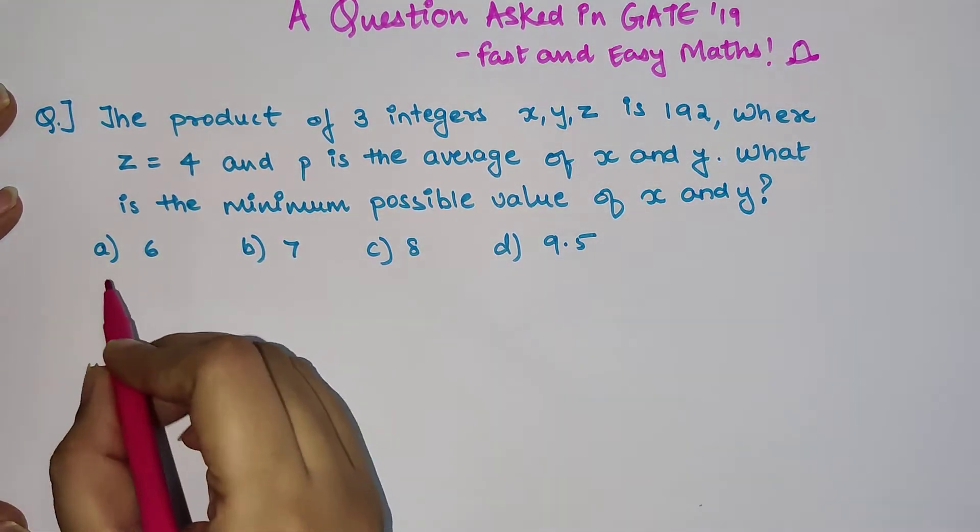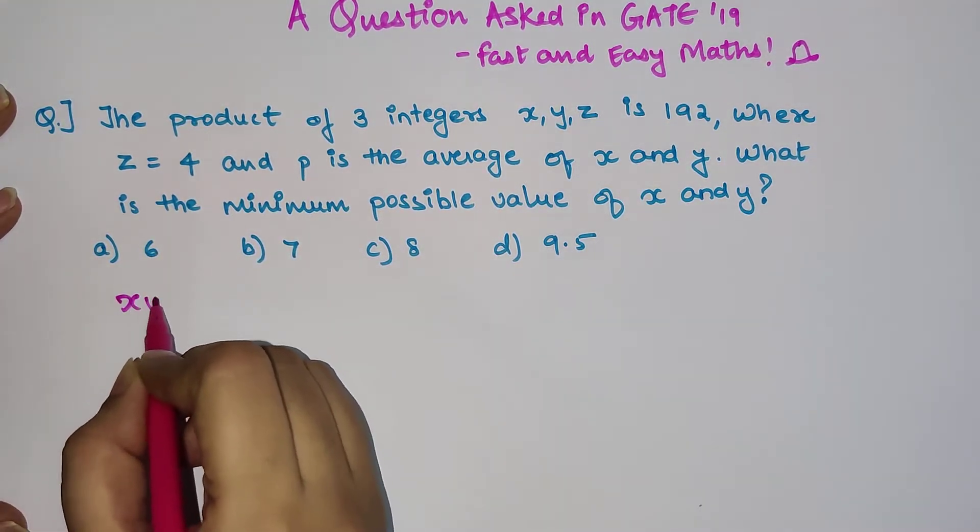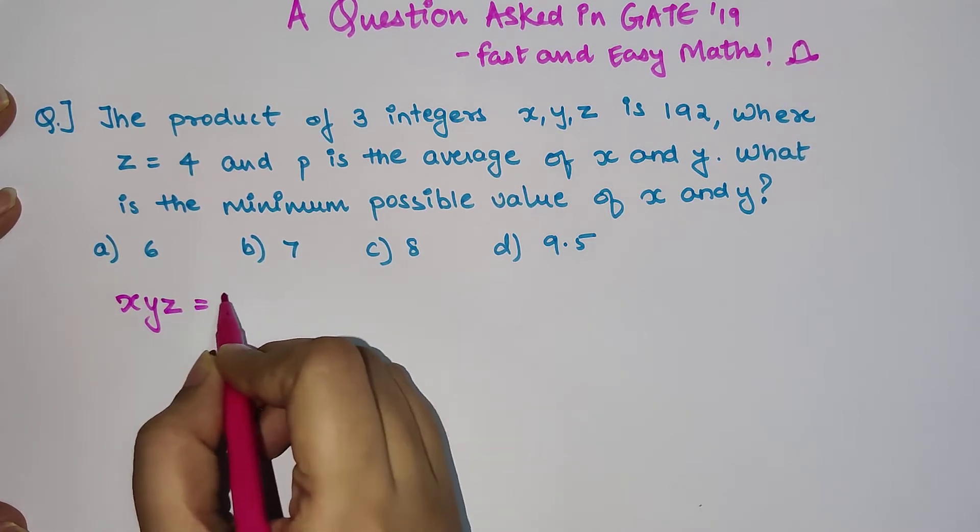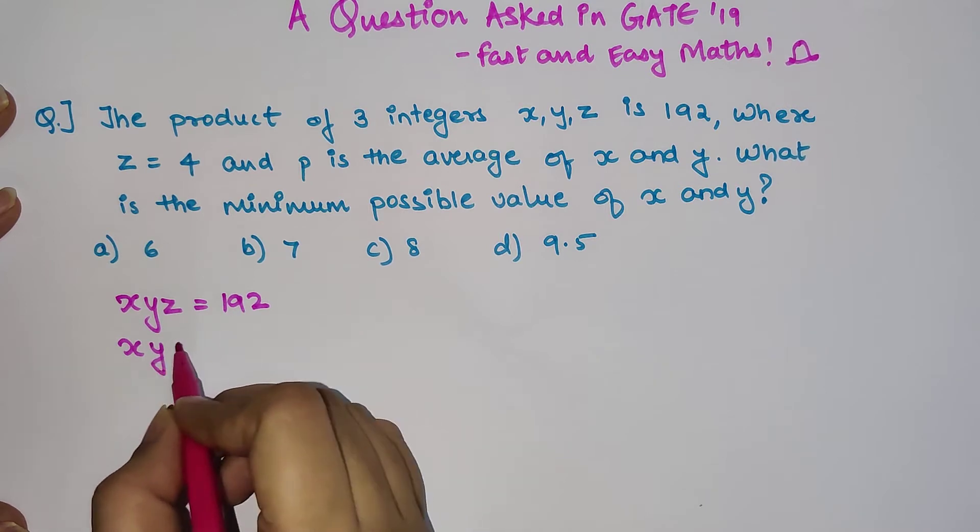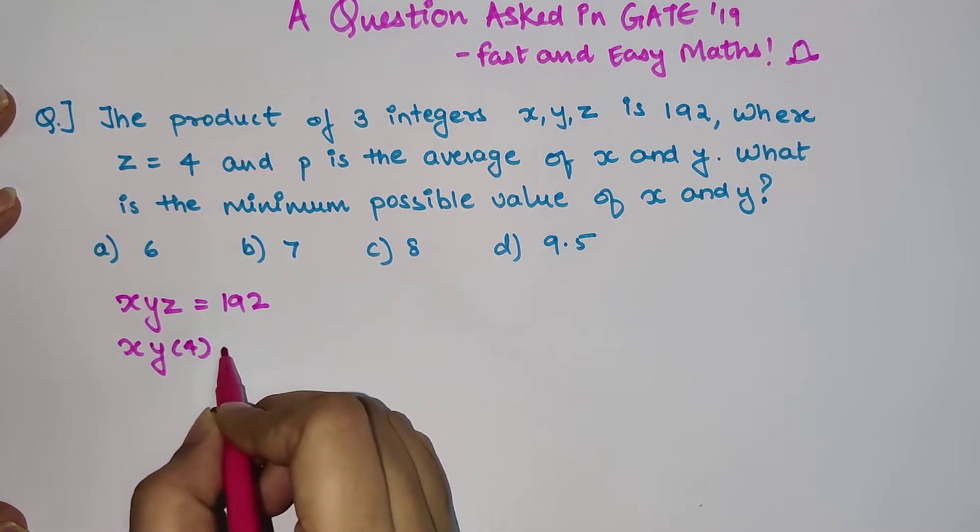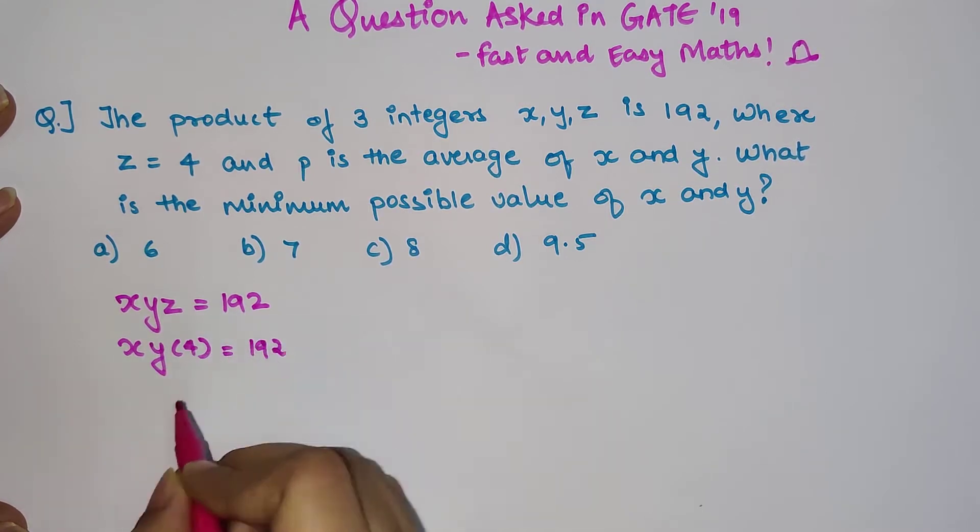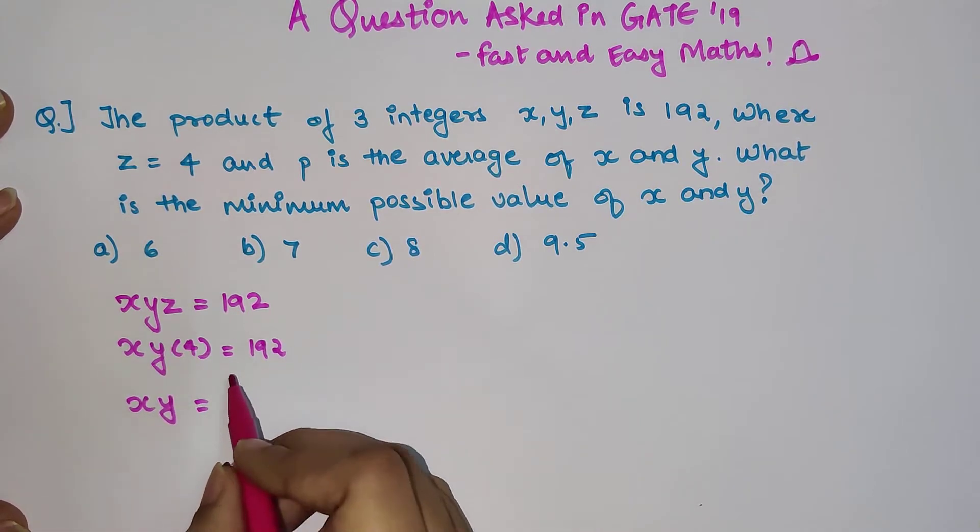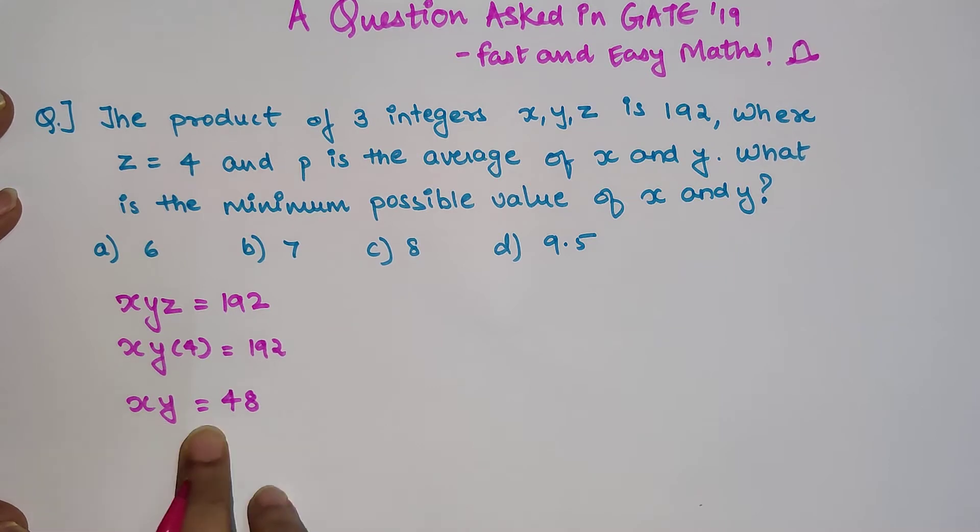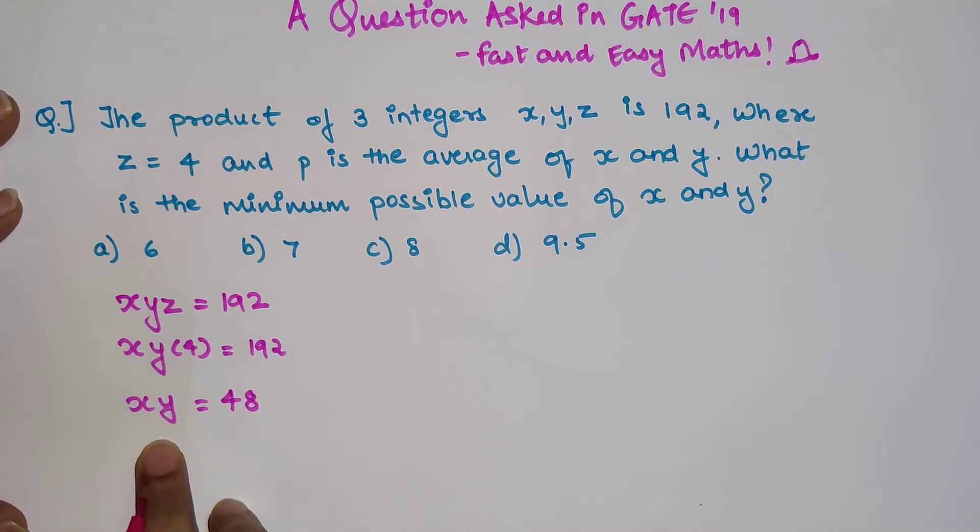First things first, as we know that X into Y into Z is equal to 192, and since Z value is given as 4, so I can say X into Y is equal to, dividing both sides by 4, we get 48. Now we know that the product of X and Y is 48.